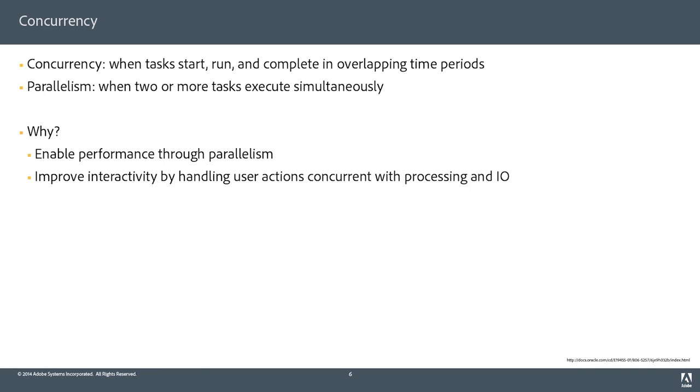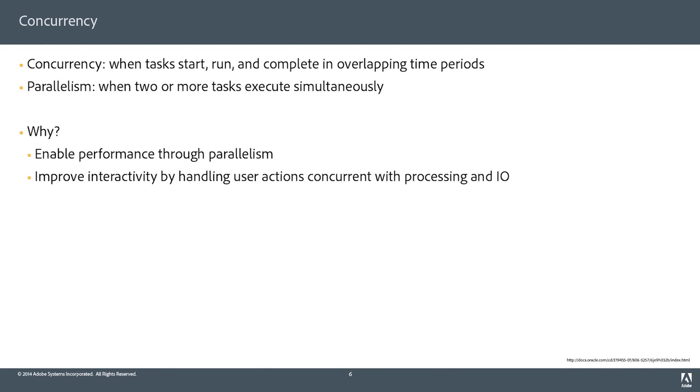First, some definitions. Concurrency is when tasks run and complete in overlapping time periods — a task you can typically think of as a function — but it doesn't mean the same thing as parallelism. Parallelism is when things actually run simultaneously. I can have concurrency even with a single thread of execution, by time slicing the thread, using a cooperative threading model, or by breaking up tasks and re-queuing them. Concurrency is the basic building block that allows you to get to parallelism.